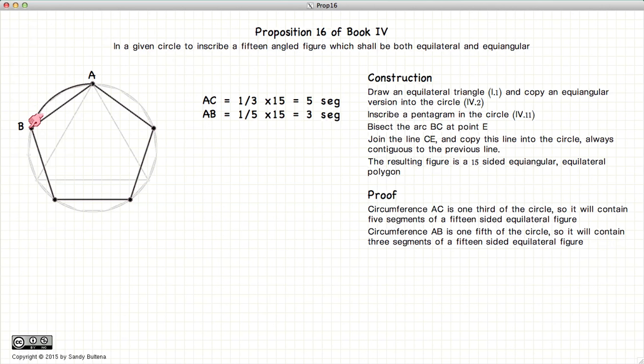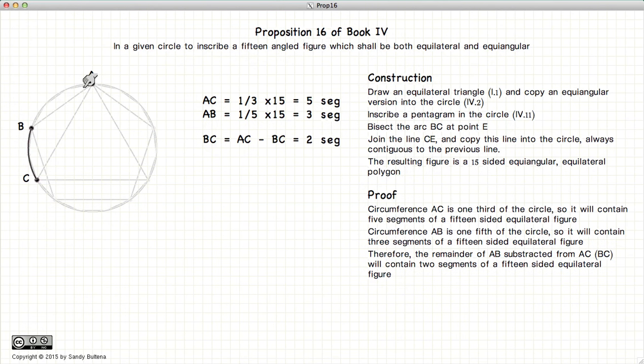So again, this is one fifth of our circle. So if we look at AC, which was five segments or one third of our circle, and subtract off one fifth of our circle...